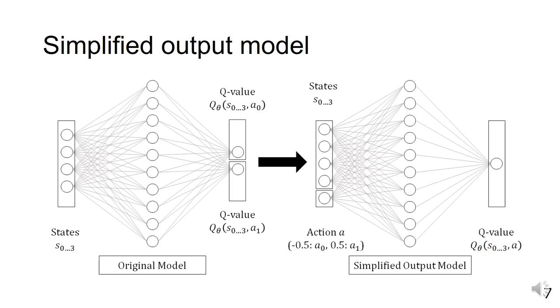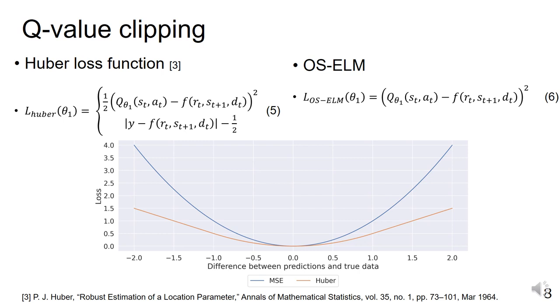The second method is Q-value clipping. In DQN, the Huber loss function, as shown below, can be used to deal with outliers. However, OS-ELM cannot use any loss function other than the squared error, so a different approach is required.